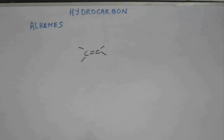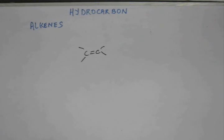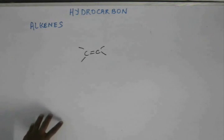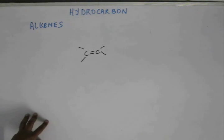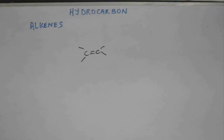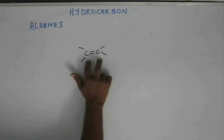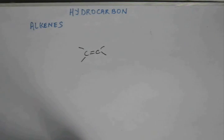There shouldn't be anything apart from hydrogen and carbon; there shouldn't be other functional groups, and there must be at least one carbon-carbon double bond. Now, we studied very few reactions — I taught you only one reaction of alkene. There are other small reactions like combustion and pyrolysis, which are not important. But for alkenes, there will be many reactions. The reason is simple: alkene is more reactive than alkane, and hence it will show many reactions.